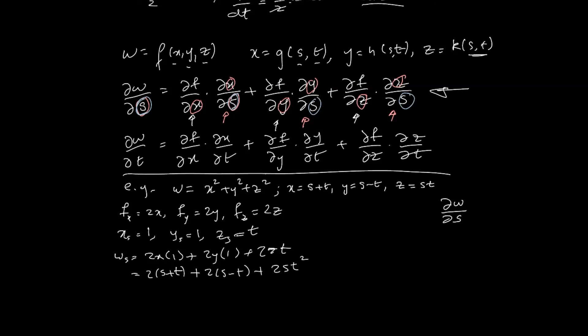You could also compute w_s by first substituting to write w = (s+t)² + (s−t)² + s²t², and then differentiating directly. That works here because the relationships are simple. However, it is important to understand the chain rule and how it works, because in other situations the transformation may be much more complex, and knowing the structure of the chain rule is essential.